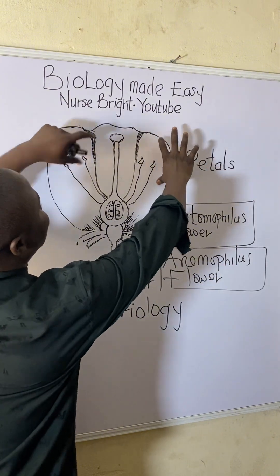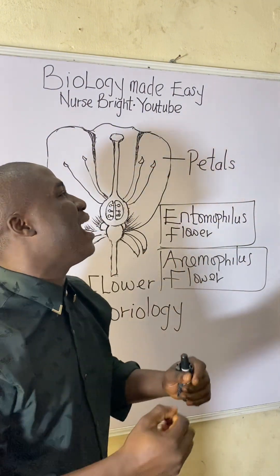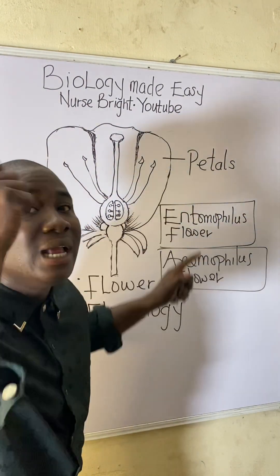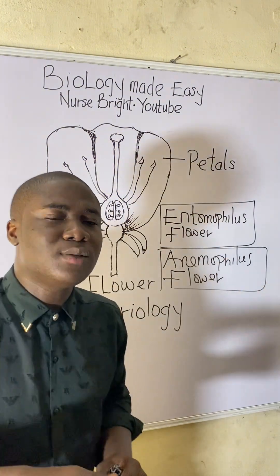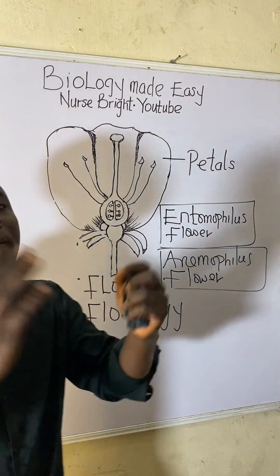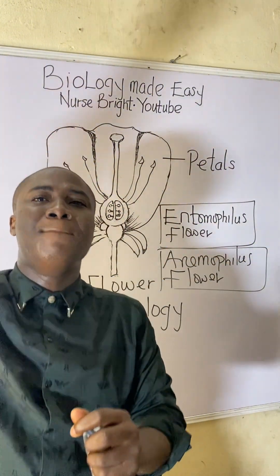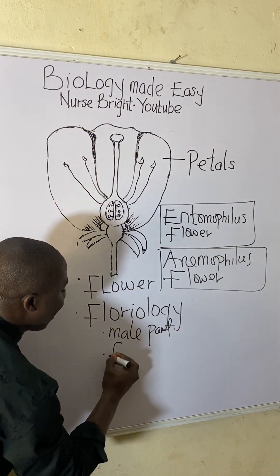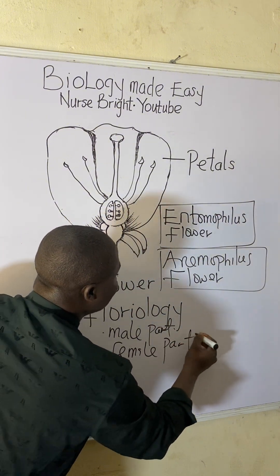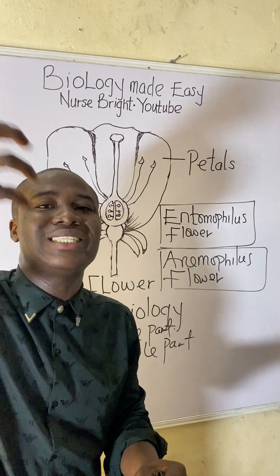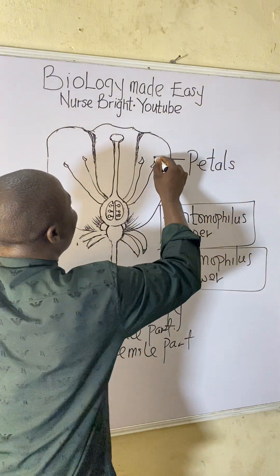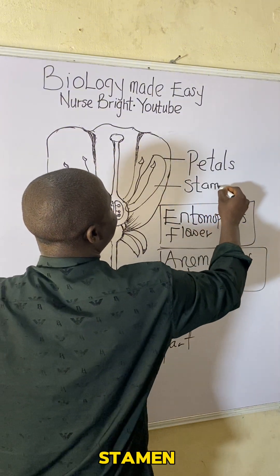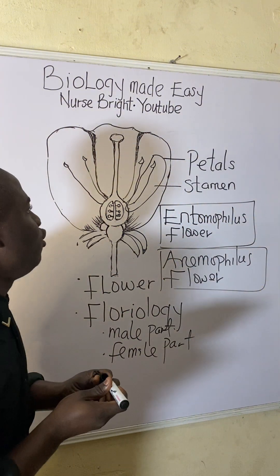To recap: the large, brightly colored part of the flower that attracts insects for pollination is called the petals. Now, a flower has two main parts — the male part and the female part. The male part of the flower is called the stamen.